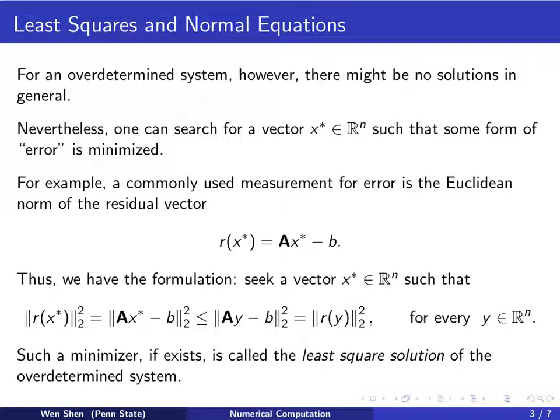So this means x star is a minimizer. It minimizes the function, the Euclidean norm square of the residual. Such a minimizer, if exists, is called the least square solution of the overdetermined system.